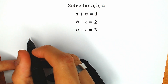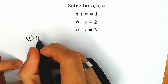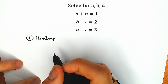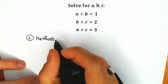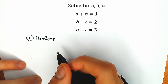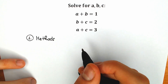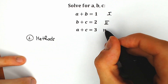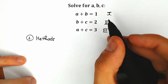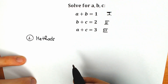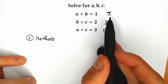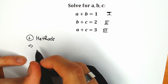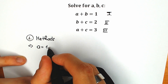So let's start. I'm going to start on the left side. This is our first method — I'm going to show you four different methods to solve this question. The first method is called the substitution method.